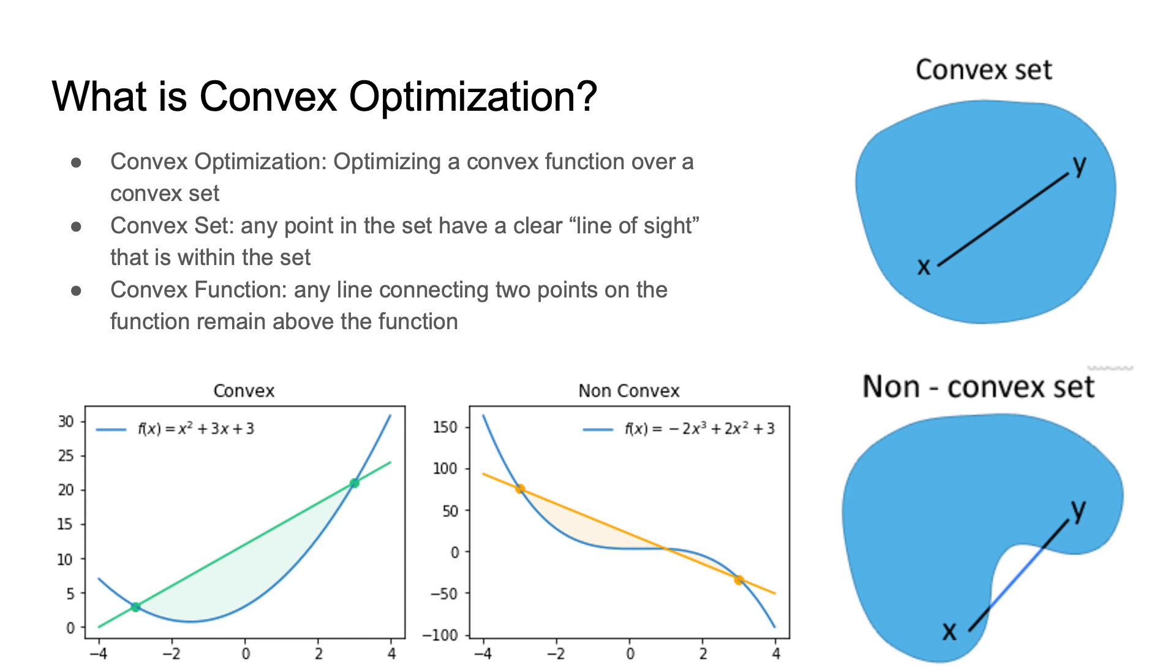...a convex set is a set where you can choose any two points within the set, draw a line between them, and this line will always remain within the set. Put another way, any two points in the set have a clear line of sight with each other. A convex function is one where a line drawn between any two points on the function lies above the function. You can think of a convex function as a type of bowl, like a parabola in R2, but in higher dimensions, you can think of it as a paraboloid or any other sort of bowl with a single minimum point.